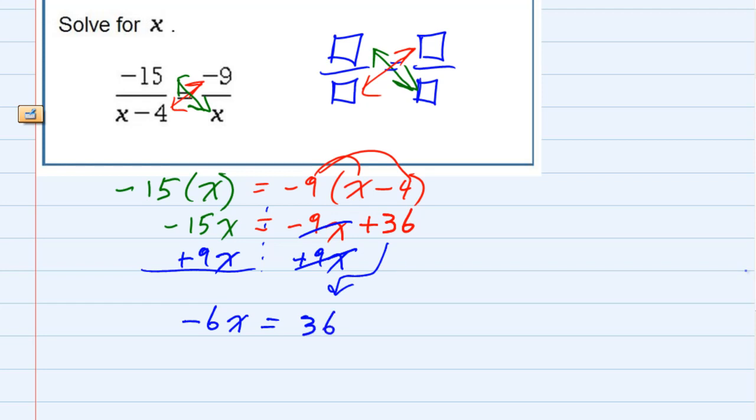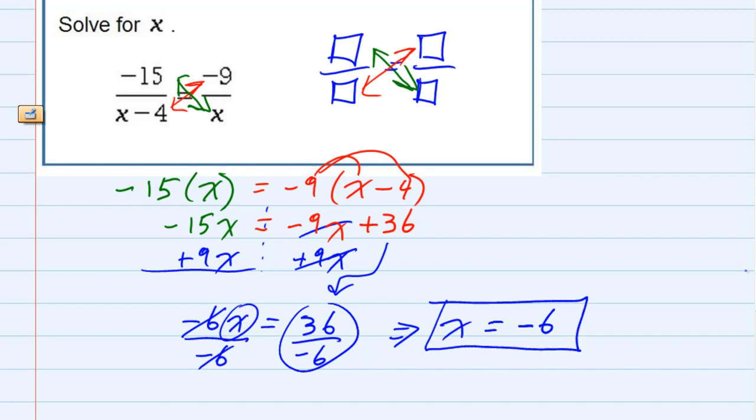To finish solving for x, I divide by negative 6 on both sides. That gives us x on the left equals—the right-hand side simplifies to negative 6, since 36 divided by 6 is 6 with a negative sign. So negative 6 is my answer for x.